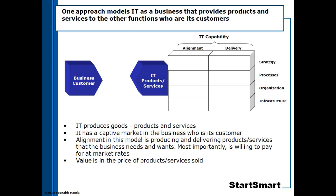IT capability has two components: alignment and delivery. Its elements include vision and strategy, organization, infrastructure, and processes. If you look at IT as a business, that same capability is now producing products and services, and those products and services are being sold to the business. This is the connection we need to establish between IT capability, business capability, business model, strategy, processes, and your customer.